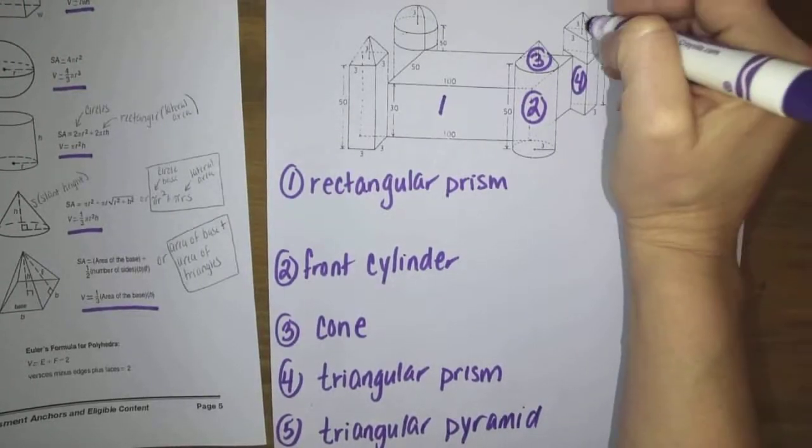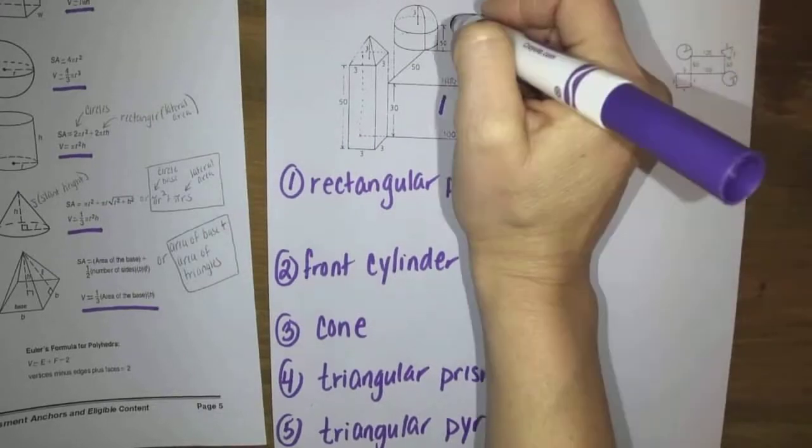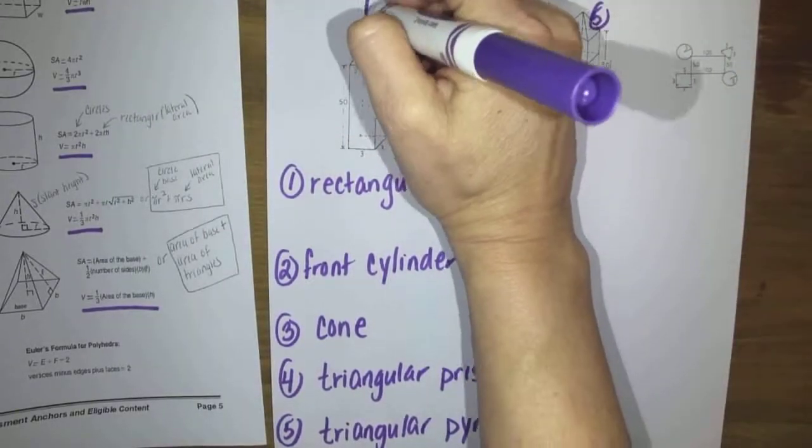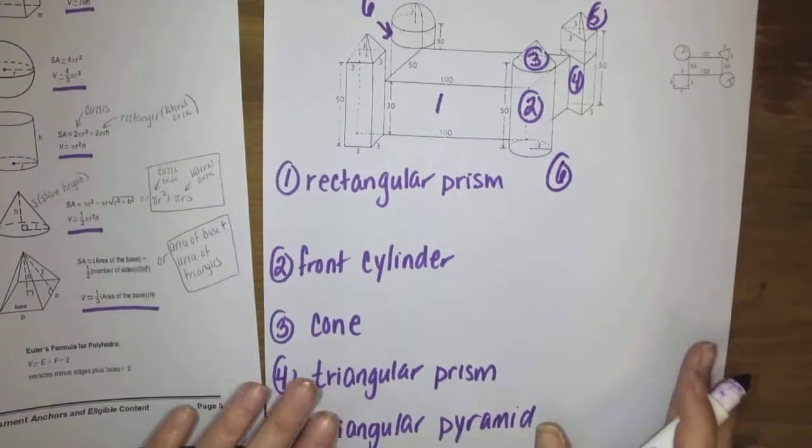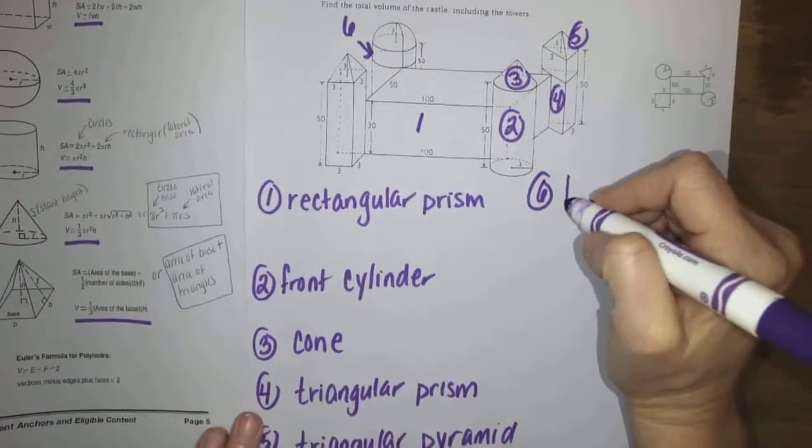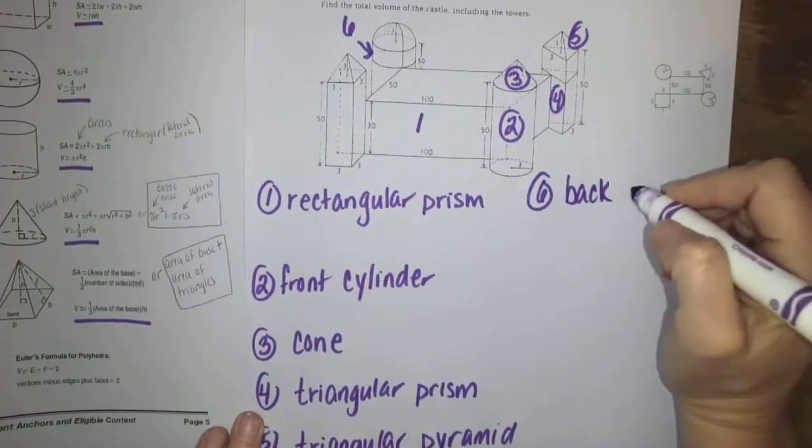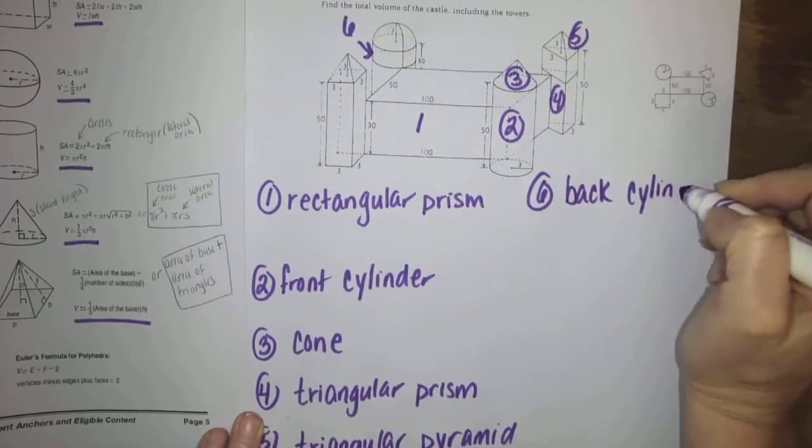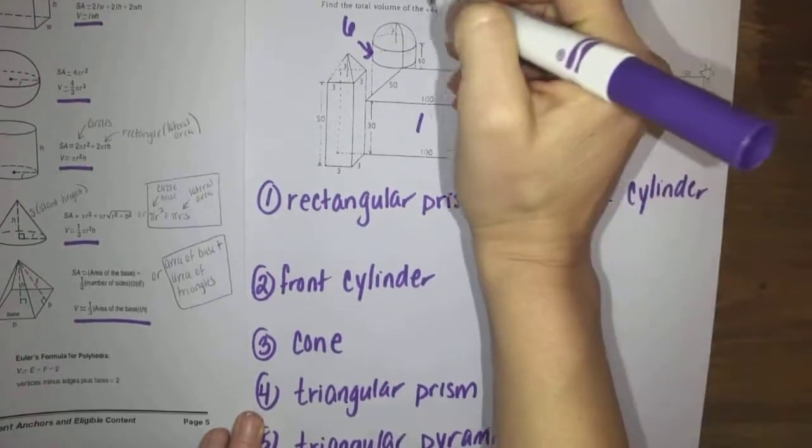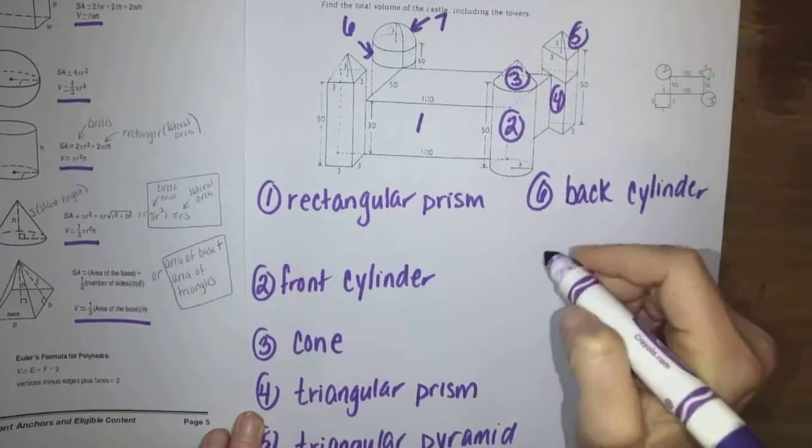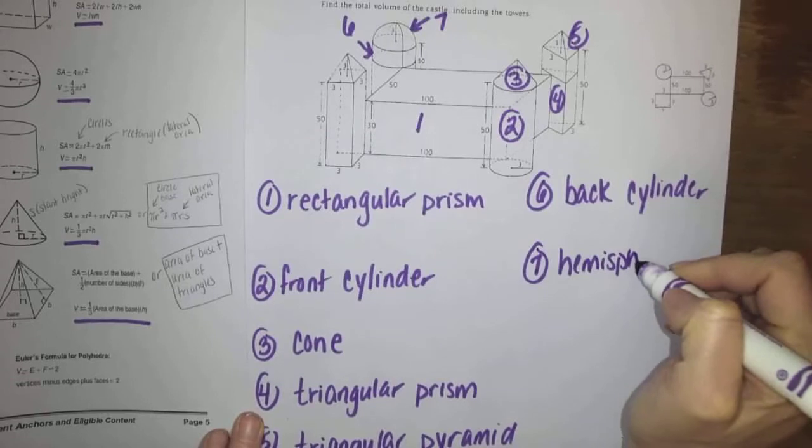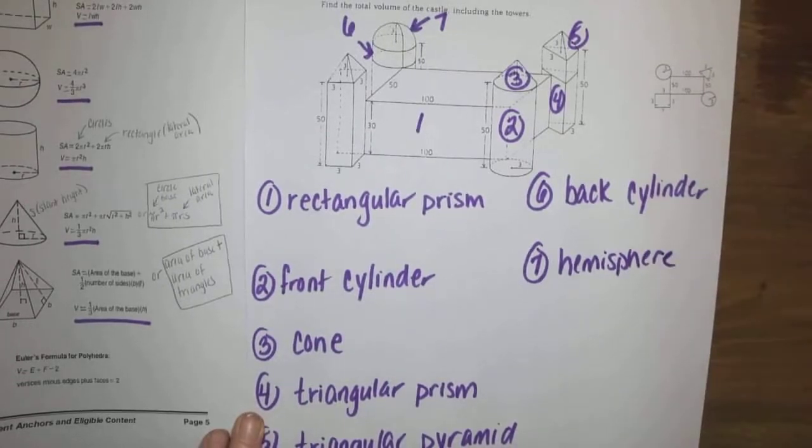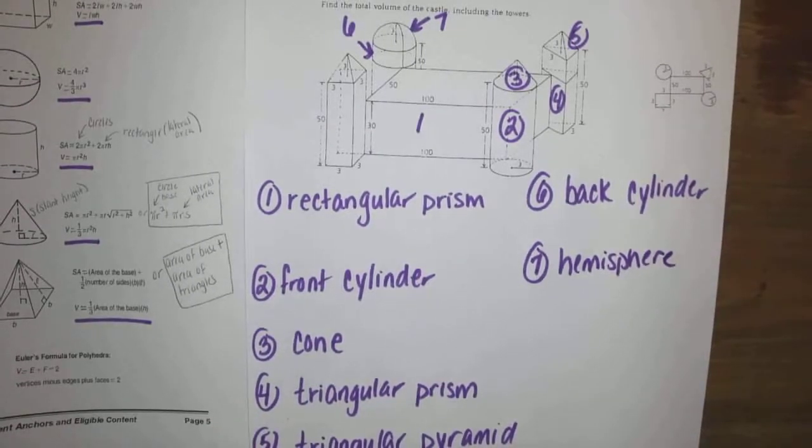Next one I'd like to do, so that's number five. Number six is down here on the bottom, that would be, we'll call that your back cylinder. On top of that, right here, number seven, that is a hemisphere. It is a sphere cut in half, so if you can find the whole sphere, you can divide that in half to get the hemisphere.